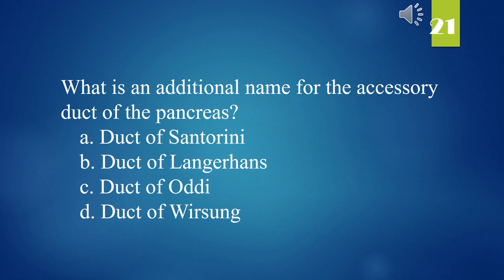What is an additional name for the accessory duct of the pancreas? A. Duct of Santorini. B. Duct of Langerhans. C. Duct of Oddi. D. Duct of Wirsung. The answer is A. Duct of Santorini.